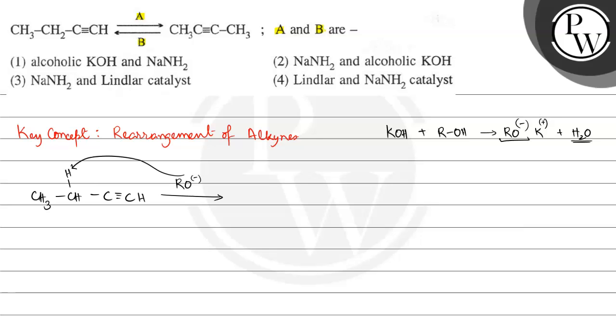So RO- takes up this proton and this forms CH3 then CH then here C triple bond CH. And here is a negative charge. This negative charge comes over here and this goes over here.